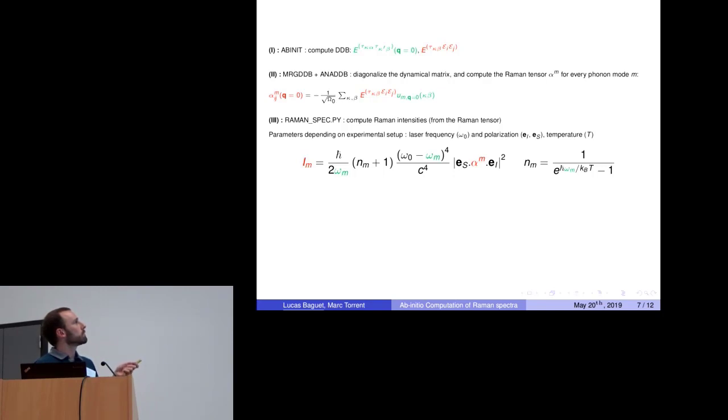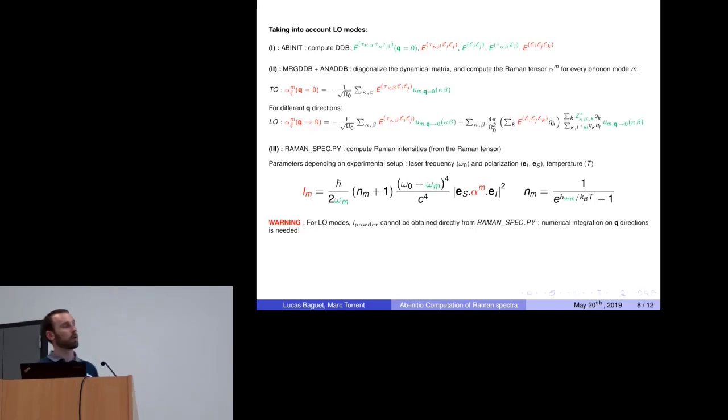This script can read the output of anaddb to produce Raman intensities by reading the Raman tensors and the phonon frequencies. Also, the user has to specify the experimental setup as light polarization—here EI for the incident light, and also for the scattered light, and also the temperature in order to fix the Bose-Einstein factor. This script can compute—this is the general formula for a monocrystal with polarized light. But we can also compute the intensities for a powder. This is for TO modes.